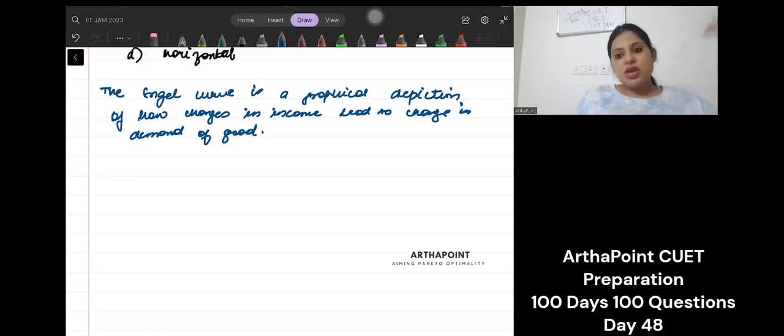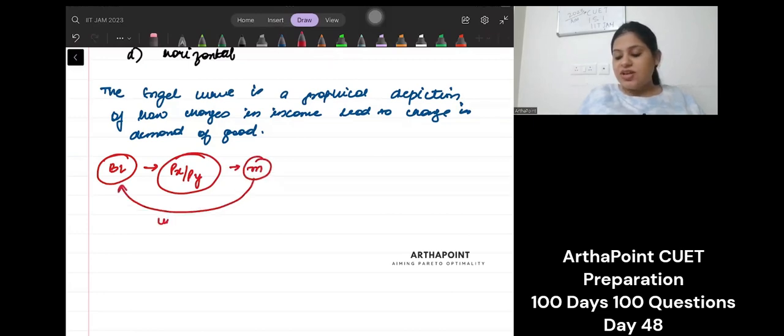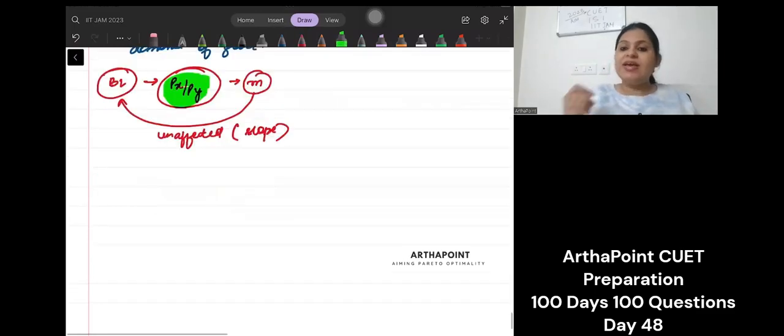The Engel curve basically tells us what is the relation between income changes and the demand of good. When we talk about the changes in income and the budget line, the slope of budget line is PX by PY. Whenever my income changes, the budget line is unaffected by income in terms of slope. When income increases or decreases, the slope of the budget line will not change. What will change will be a shift of the budget line. It will shift to the right or left depending on whether there is increase in income or decrease in income.